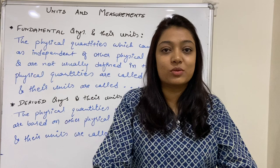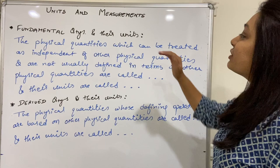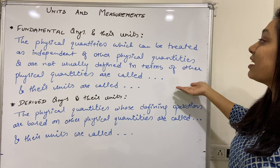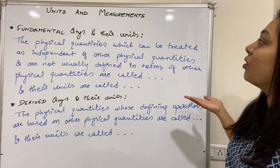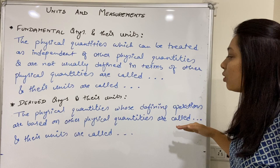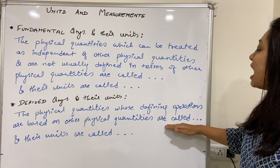The physical quantities which can be treated as independent of other physical quantities and are not usually defined in terms of other physical quantities are called fundamental quantities or base quantities, and obviously their units are called fundamental or base units. On the other hand, the physical quantities whose defining operations are based on other physical quantities are called derived quantities, and obviously their units are called derived units.